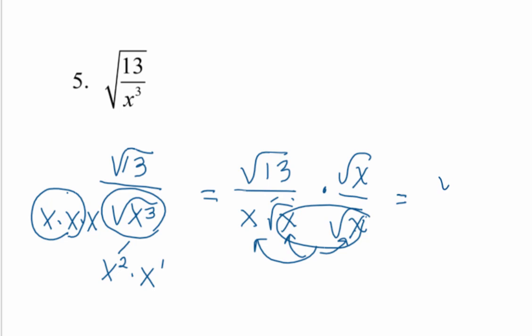So in the numerator, you've got square root 13x. Okay, but down here now you have this x times this x, which is x squared. Okay, nice and rational. All right, beautiful.